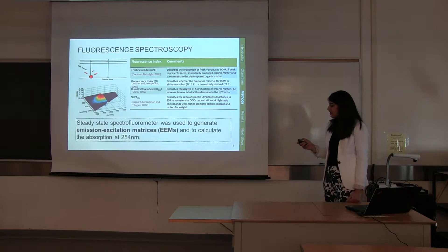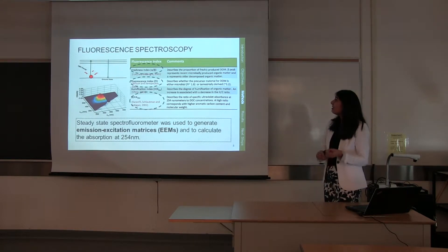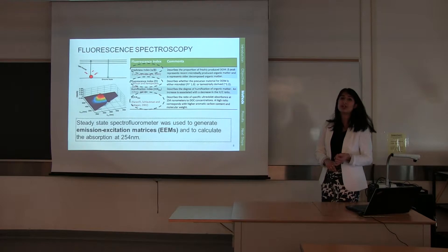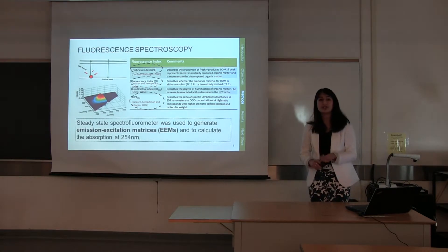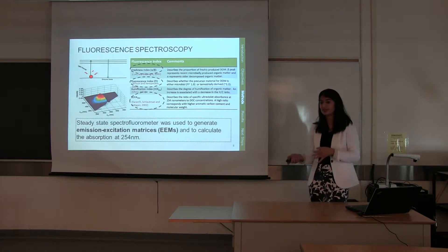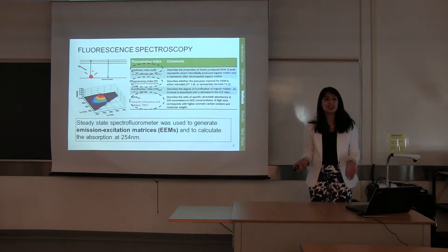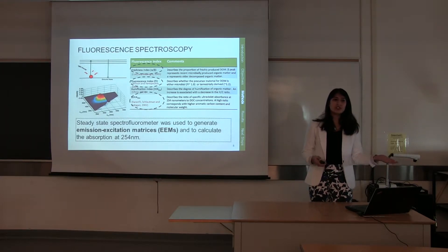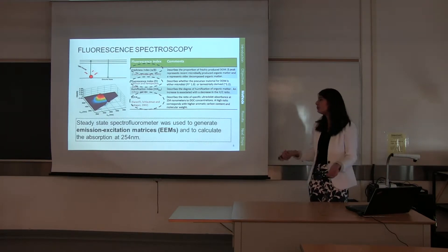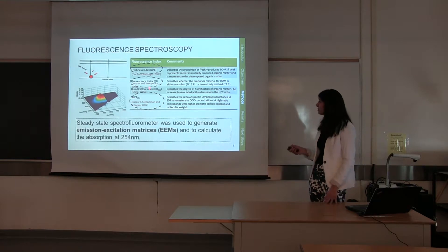These indices tell us the proportion of freshly produced dissolved organic matter compared to older dissolved organic matter within the study area. They also reveal where the dissolved organic carbon is coming from — whether it is terrestrially derived or microbially derived — which is what the fluorescence index tells us.